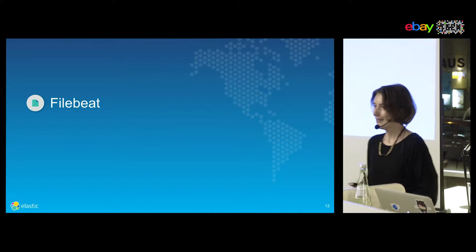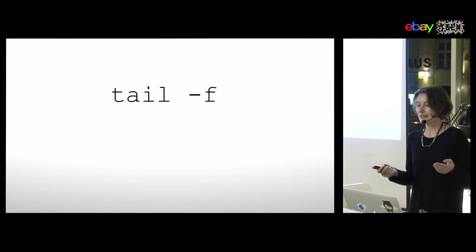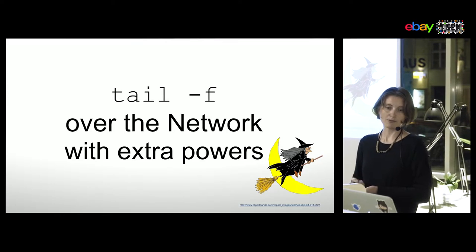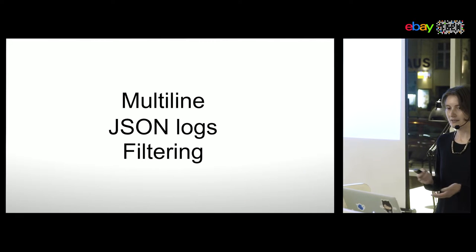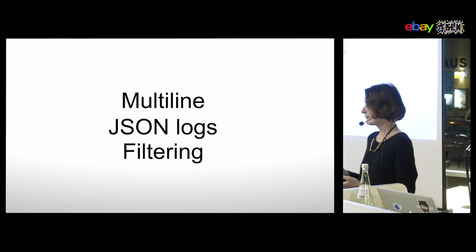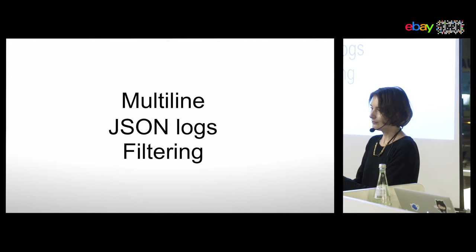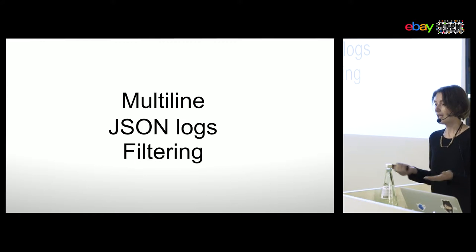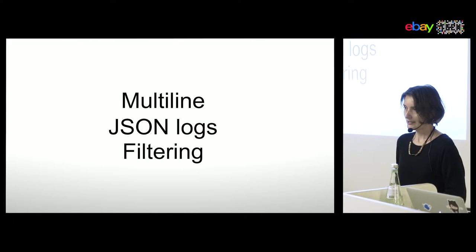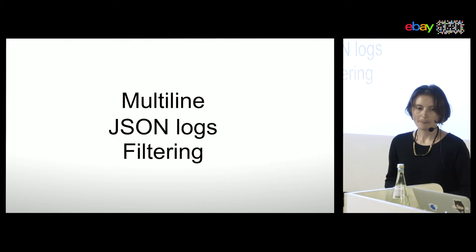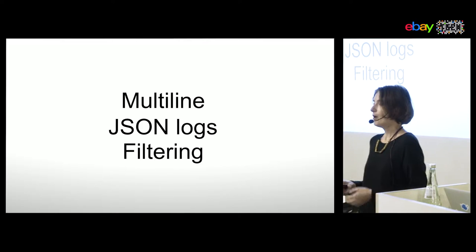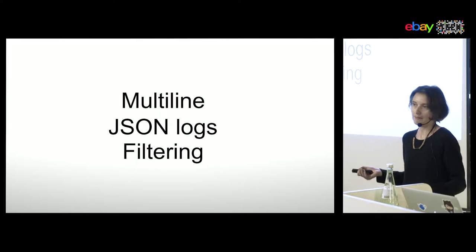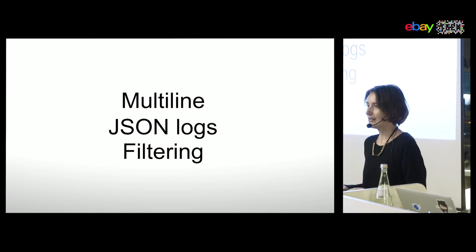Filebeat is like running tail-f on all your servers, but instead of printing the result on the screen, you send it over the wire to Elasticsearch. It also comes with extra powers: support for multi-line — think of Java exceptions that span multiple lines — JSON logs for applications with structured logging, and filtering, because you may only want to ship a subset of log lines, for example only errors or warnings rather than debug messages.